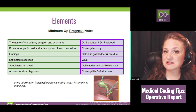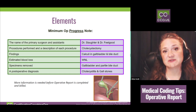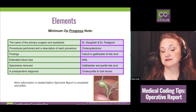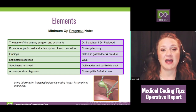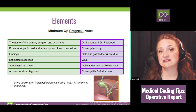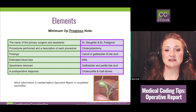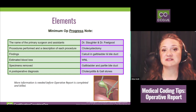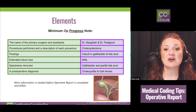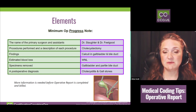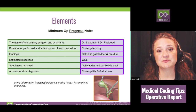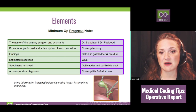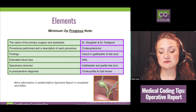My cholecystectomy was done in an acute setting. I'd never had any signs or symptoms before, then suddenly had a horrible attack. They checked me, thought that was it, sent me home, and less than 12 hours later I thought I was dying. Back to the ER over the weekend, they kept me on medication, and Monday morning I was taken in to have my gallbladder removed. The surgeon said they'd do it laparoscopically — very seldom do they have to change to an open procedure — but he said he wouldn't delay if he had to.